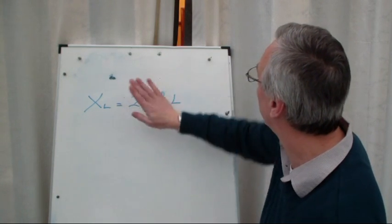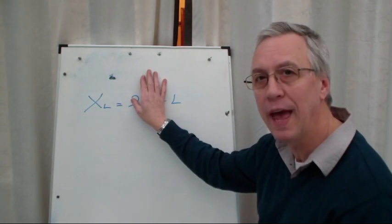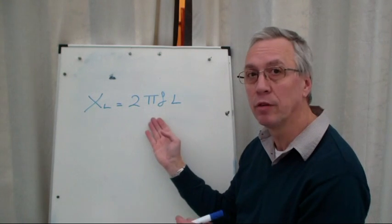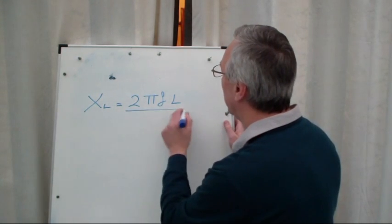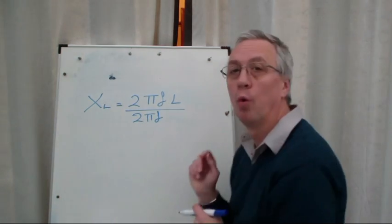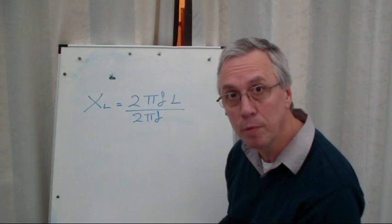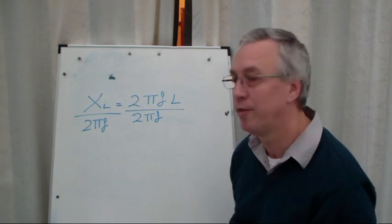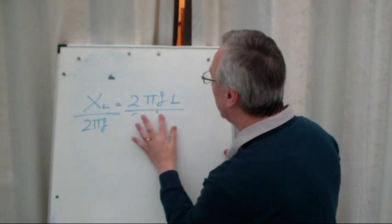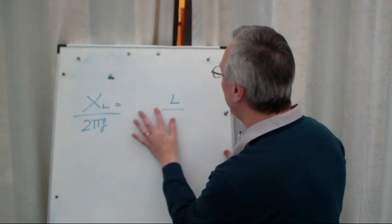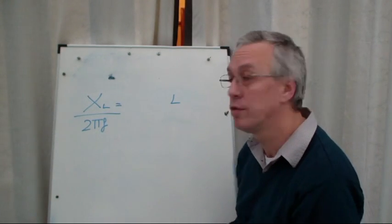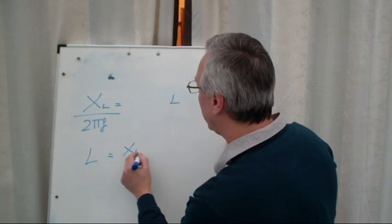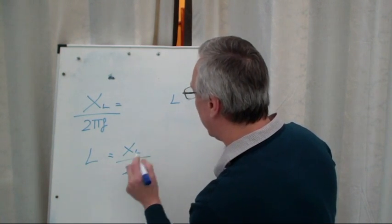We've got to get rid of the 2πF in order to get L on its own. We have to get rid of that. So how can we do that? We need to be able to cancel that out. So let's divide this side by 2πF. Whatever we do to one side, we must do to the other to keep the balance. XL therefore has to be divided by 2πF. 2πF divided by 2πF is just one. So we end up with L on its own. Express it with the subject on the left, and you get L equals XL over 2πF.